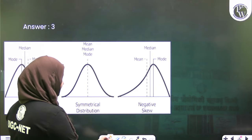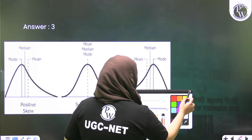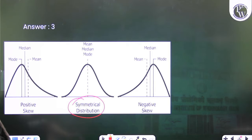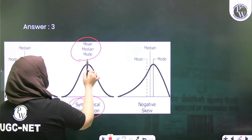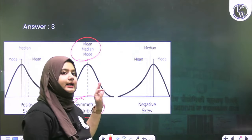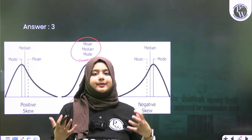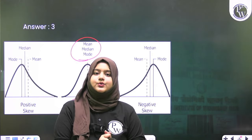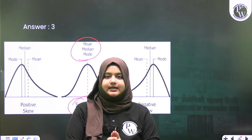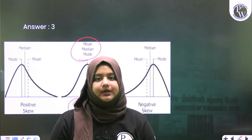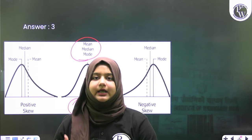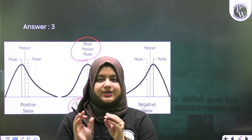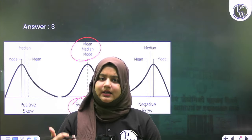Negative skewness means mean and mode in a certain order; positive skewness means another order; symmetry means they're equal. In a symmetrical distribution, mean, median, and mode are similar. But if the distribution isn't symmetrical, skewness can be positive or negative.